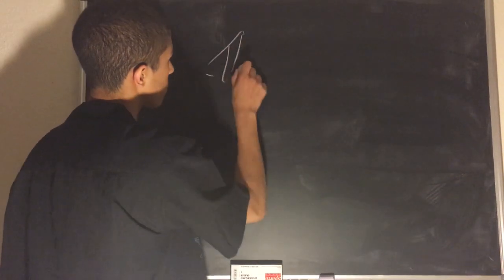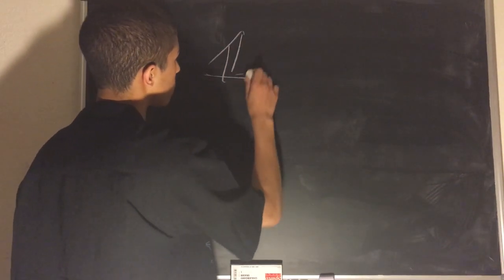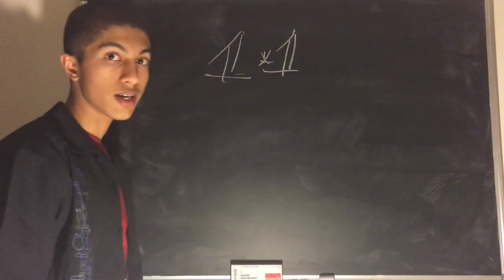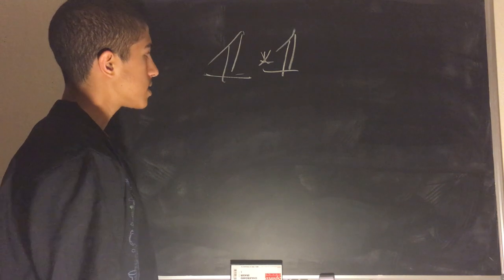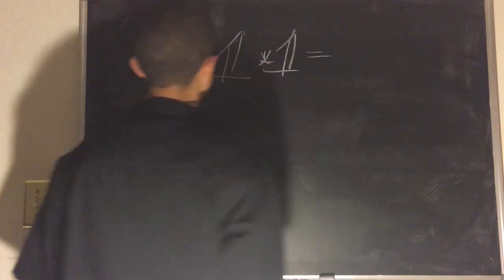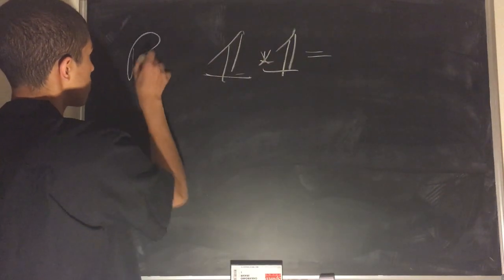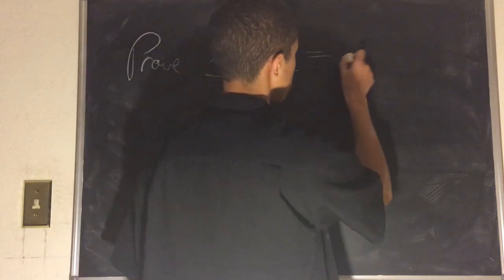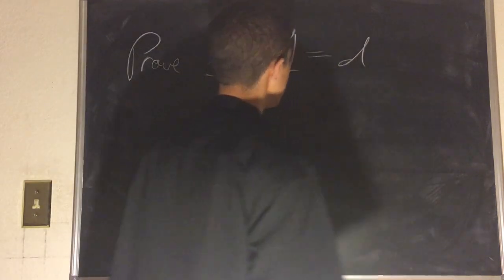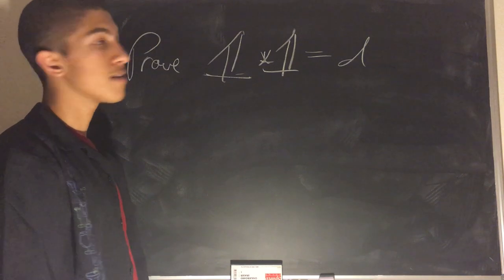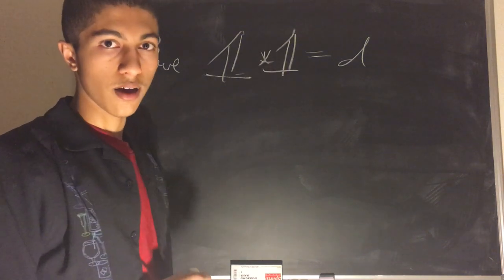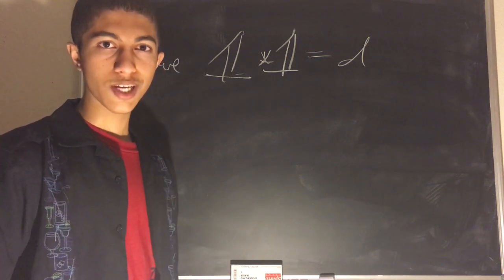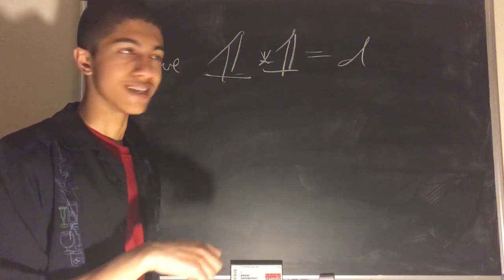The first example will be the function 1 convoluted with 1, and we'll see exactly what this is. So the first exercise will be: prove that 1 * 1 is equal to D. And if you forget what any of these arithmetic functions are throughout the video, you can always reference the arithmetic functions video which I published before this.